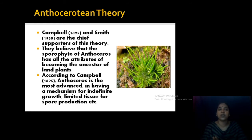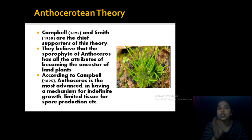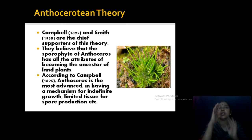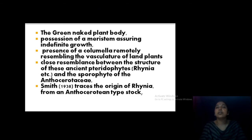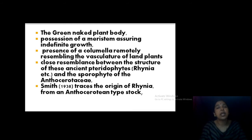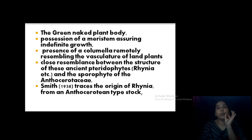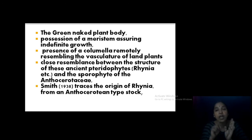According to Campbell, Anthoceros is the most advanced, having a mechanism for indefinite growth — that is a very important point. There are tissues limited for spore production: the center region is the columella, and from the base onward there is sterile tissue, while near the apex you can see spores or sporogenous tissue. So only some portion is meant for spore production; all other portions are sterile. The supporting evidences are: a green naked plant body, and the presence of a meristem that assures indefinite growth.